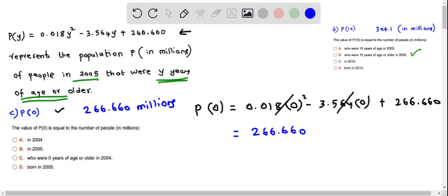And let's answer this question. The value of p of 0 is equal to the number of people in terms of millions. So it is not 2004, it is not they were born in 2005. This is equal to the number of people in 2005, no it is not. Who were 0 years of age or older, no it is not.